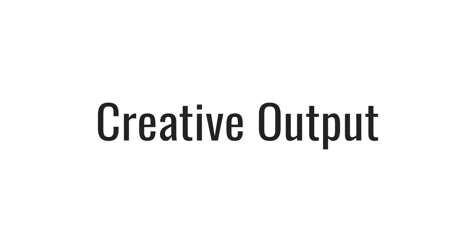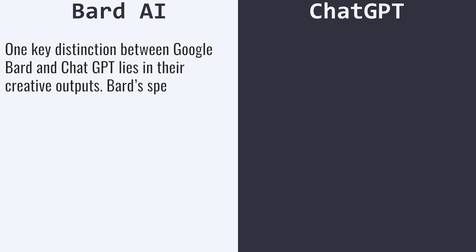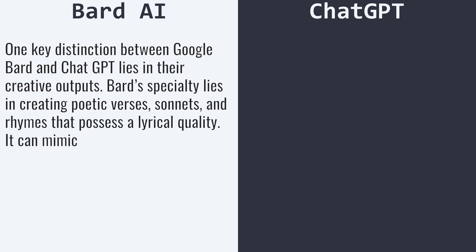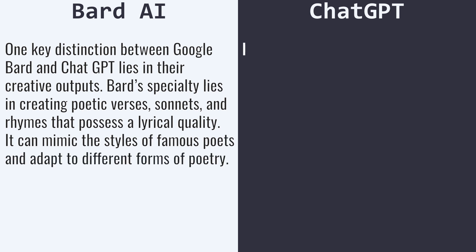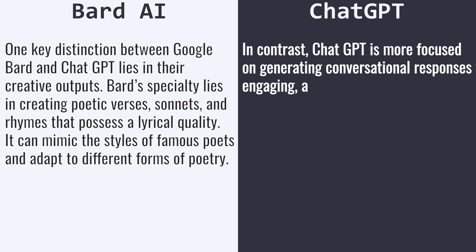Creative output. One key distinction between Google Bard and ChatGPT lies in their creative outputs. Bard's specialty lies in creating poetic verses, sonnets, and rhymes that possess a lyrical quality. It can mimic the styles of famous poets and adapt to different forms of poetry. In contrast, ChatGPT is more focused on generating conversational responses that are informative, engaging, and contextually relevant.